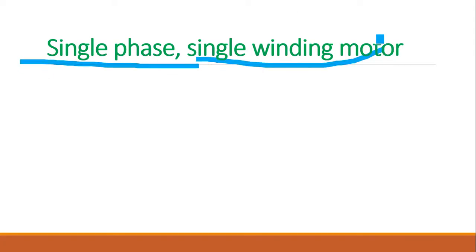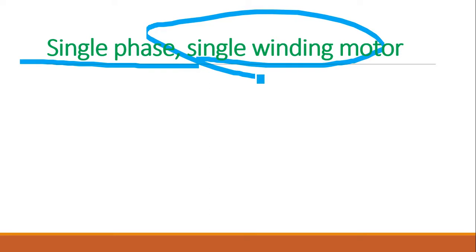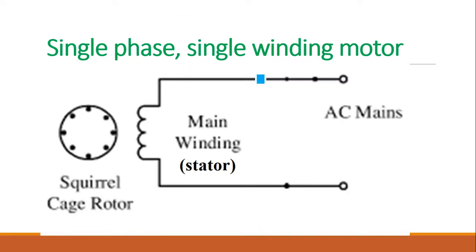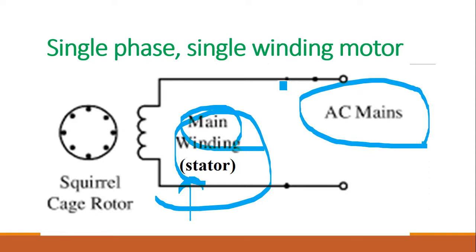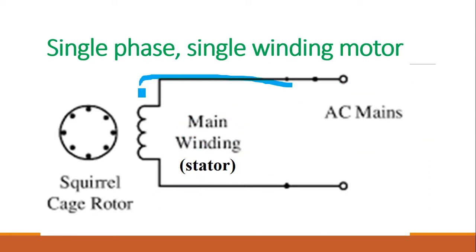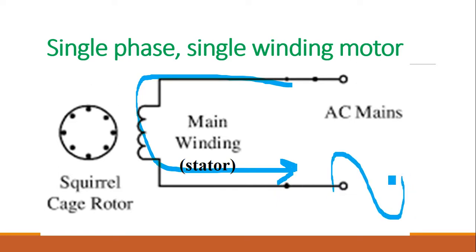To discuss the single-phase motor, we will consider only one winding — the main winding on the stator, which is the stationary part of the motor. Supply is given from the AC mains, so alternating current flows through the winding. Alternating current produces alternating flux — the flux goes positive for one cycle and negative for the next, continuously.